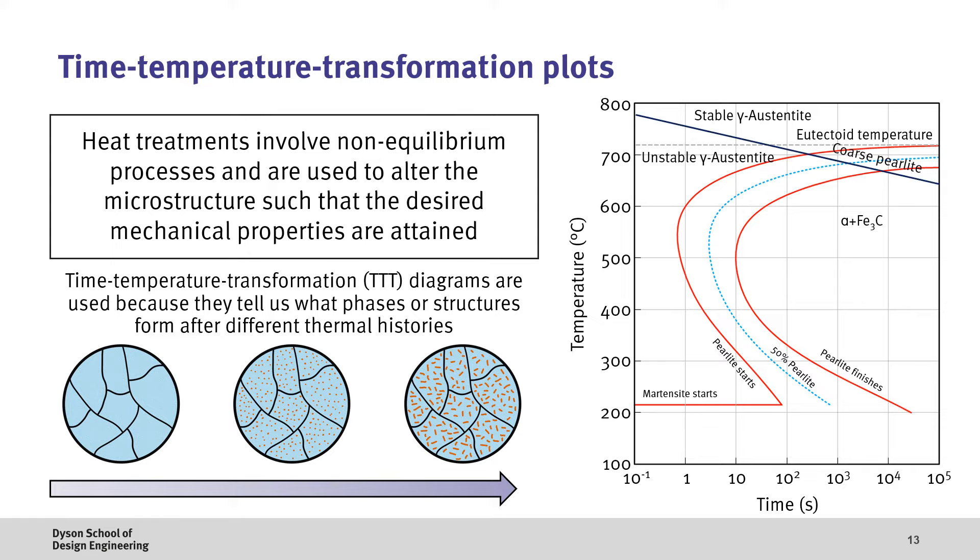Now, if we have a slow cooling process, which is represented by a line with a shallow gradient, we can see we end up into the complete ferrite plus cementite region, where we form coarse pearlite. As we increase the rate of cooling, we gradually form fine pearlite, and then bainite, which has extremely thin ferrite and cementite regions. And finally, if we quench the hot steel, we rapidly cool the material such that it never enters into the pearlite region, and instead forms martensite. Therefore, these TTT diagrams are useful for understanding the non-equilibrium structures, which form from different cooling rates.